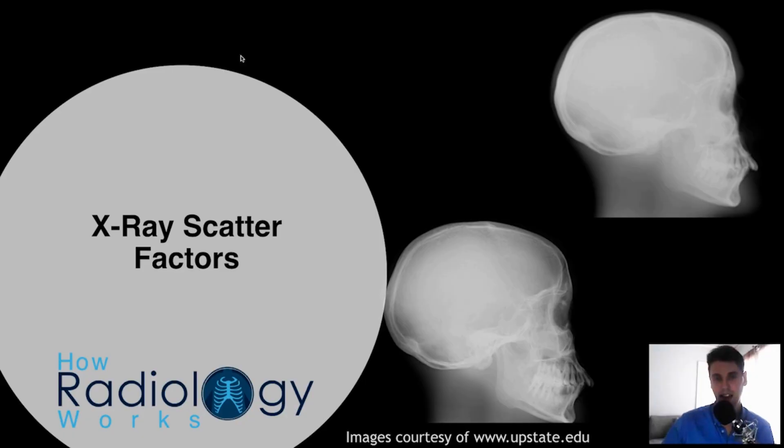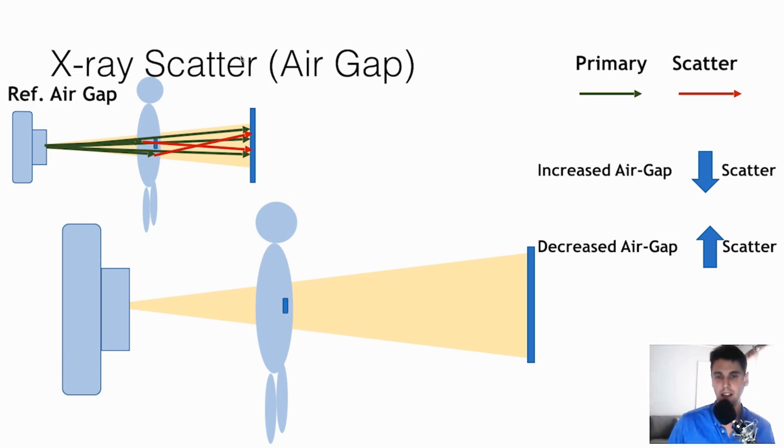Remember in general, x-ray scatter degrades image quality, leads to an overall haze added in the background of the image. The question is, how does an air gap affect the quality of an x-ray image? In terms of the x-ray scatter, which we're just going to talk about today,